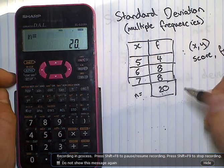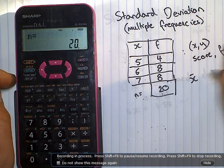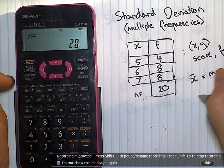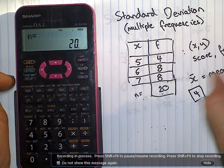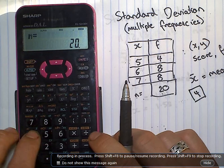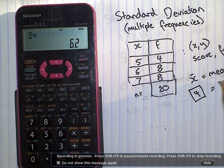First of all we're going to look at finding the average. Average is X bar, the mean, which is found above the number four. So we want to press alpha first, because it's in green. Four. Equals. Six point two.